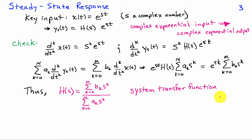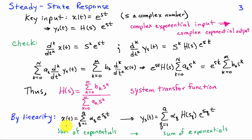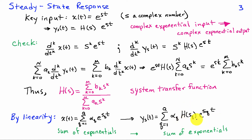The system transfer function tells us a lot about the system and is used in the study of systems far beyond our present application of differential equations. Since the system is linear, if we know how it behaves for a single complex exponential input, we can easily determine its behavior when the input is a sum of complex exponentials with coefficients alpha_q and parameters s_q. For example, to write a complex sinusoid input, we would have e^(j·omega·t) and e^(-j·omega·t) — a sum of two terms — and the output would involve those same terms modified by the transfer function evaluated at the particular values of s_q.